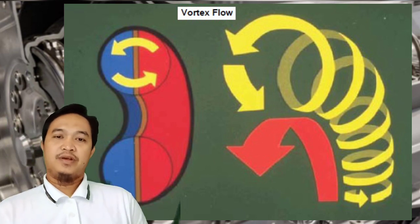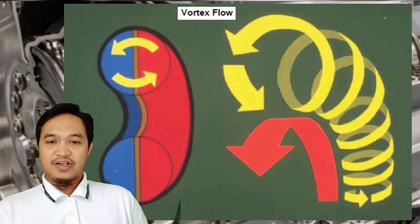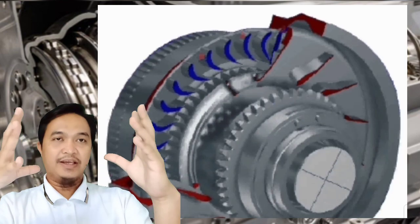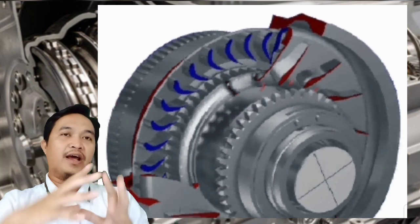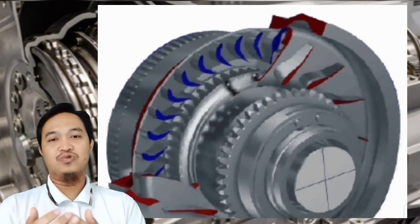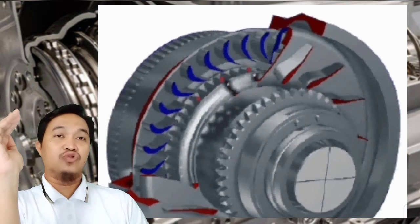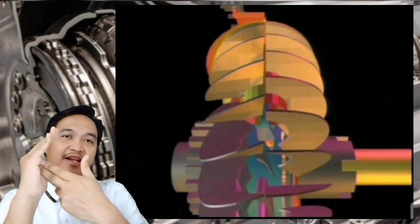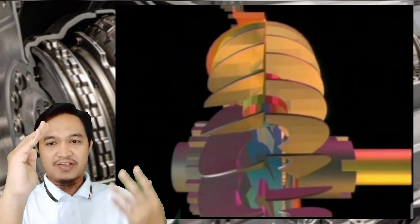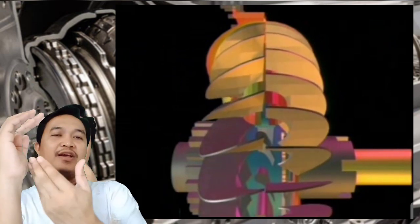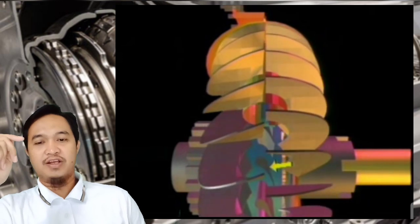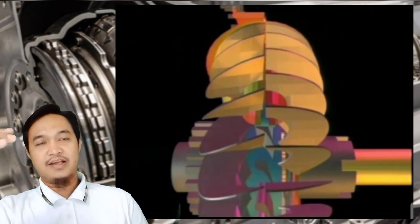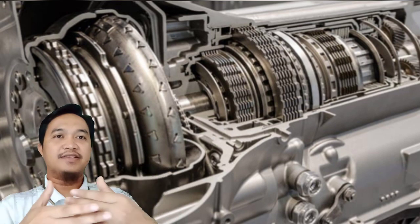Di dalam torque converter juga terdapat stator. Fungsi stator adalah mengarahkan oli dari impeller atau pump ke arah turbin dengan tepat. Sudut-sudutnya membentuk seperti busur sehingga oli yang menghantam tidak lari ke arah yang salah, melainkan diarahkan oleh stator dan disambut oleh sudut-sudut yang ada di turbin. Keunggulannya adalah torsi yang sangat tinggi ketika menggunakan torque converter.